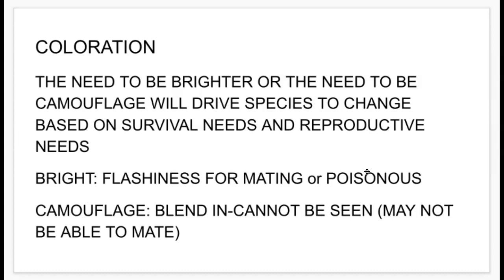Bright coloration — like flashy feathers or vivid colors — can serve as warning signs or mimicry. That brightness can be used for mating, but it can also signal to other organisms that you're a poisonous species. Think of the poison dart frog, or a wasp with its black and yellow coloration.